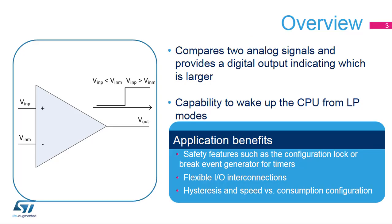The two comparators inside the STM32 microcontroller provide a binary output which indicates if the analog voltage on the plus input is larger than the voltage on the negative input. It allows the MCU to react when the analog signal crosses a predefined threshold. The comparator continuously monitors voltage, in contrast to an analog-to-digital converter which operates in sampled mode.